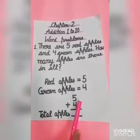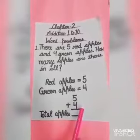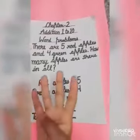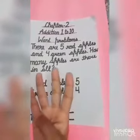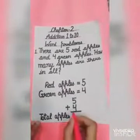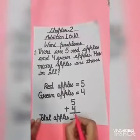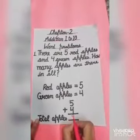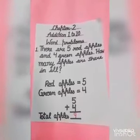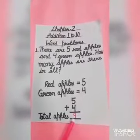5 in mind, 4 on fingers. So children, open 4 fingers and count after 5: 6, 7, 8, 9. We will write 9 here. It means the total number of apples are 9. So 9 is the answer.